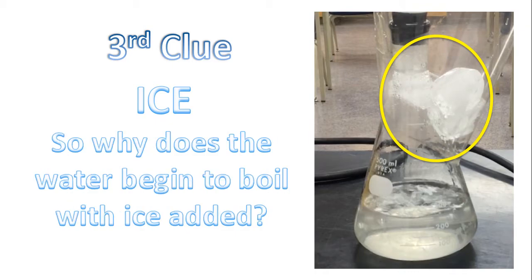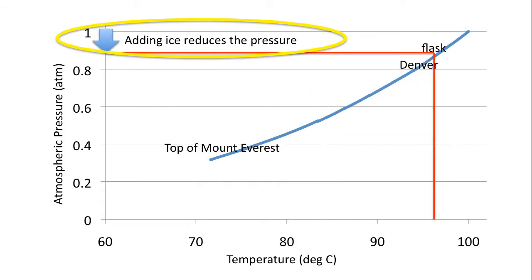So why does the water begin to boil with ice added? Returning to this graph, adding ice reduces the air pressure inside the flask. In turn, this reduces the temperature at which water will boil at.